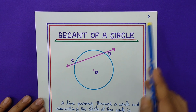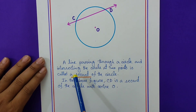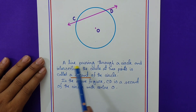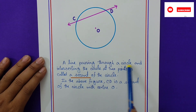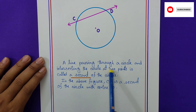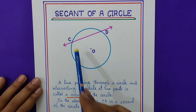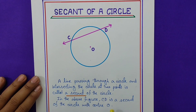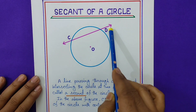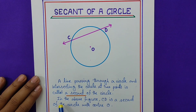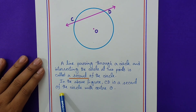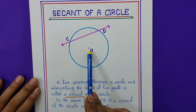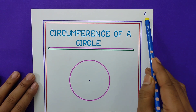Page number 5: secant of a circle. A line passing through a circle and intersecting the circle at two points — here C and D are the two intersecting points — is called a secant of the circle. So CD is the secant of the circle. In the above figure, CD is the secant of the circle with center O.